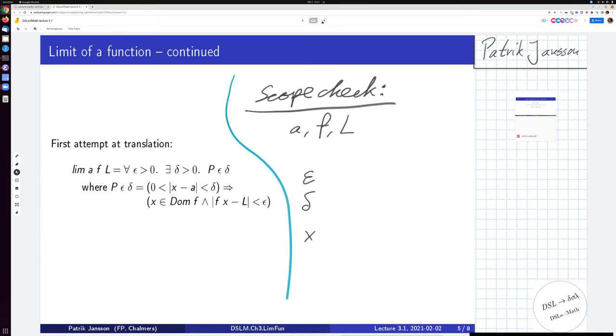So the first thing we'll do here is a scope check. First of all, we define three variables. We pattern match on three arguments to Lim on the left hand side. These three are then clearly bound in the rest of the expression. So that should be fine.